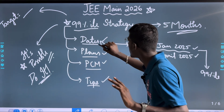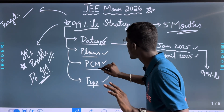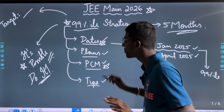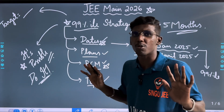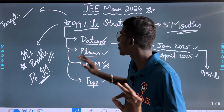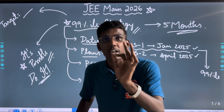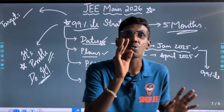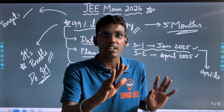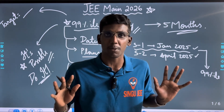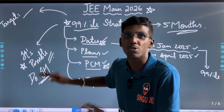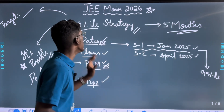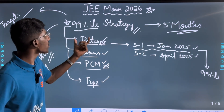These are the important dates — PCM, plans, tips, etc. You can say it's possible, you can do it. It's possible to do it. I'm happy to say these are important dates.